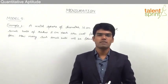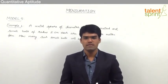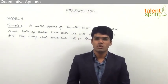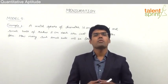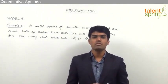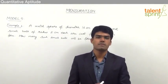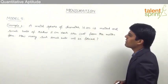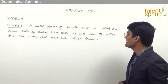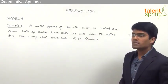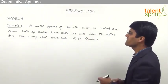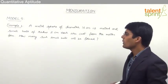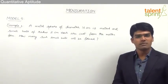Let us now take the fifth module from this topic of mensuration, where we are going to discuss questions related to the volume of solid shapes. This is a very important concept from mensuration which can be used to solve a number of questions. Let us first have a look at the given question: a metal sphere of diameter 16 centimeters is melted and small balls of radius 2 centimeters each are cast from the molten form. How many such small balls will be formed?